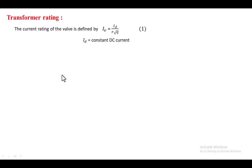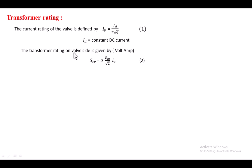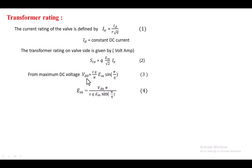For transformer rating, the current passing through the valve is defined as Iv = Id / (r × √q), where r is the number of commutation groups connected in parallel, q is the number of devices in a commutation group, and Id is the constant DC current. The transformer rating in volt-amperes equals q × (Em / √2) × Iv. We already know Iv, and the maximum converter voltage is Vd0 = (sq/π) × Em × sin(π/q).